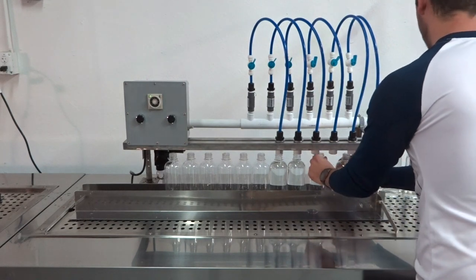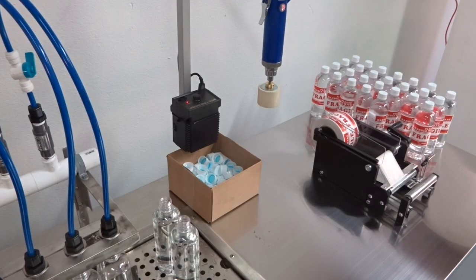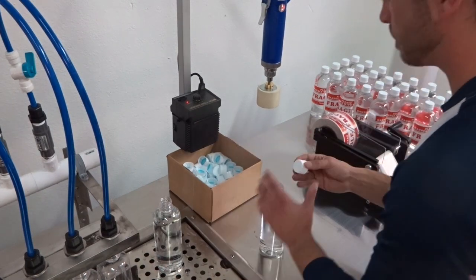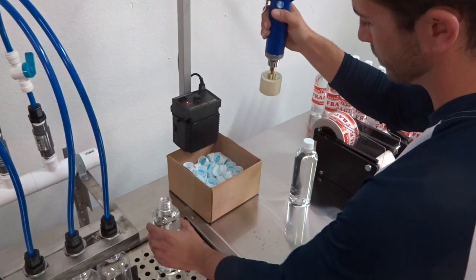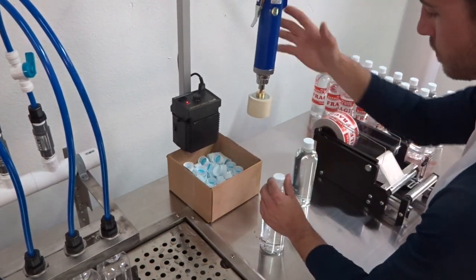Once the bottles are filled, they are moved from the filling line to the capping station. The operator places a cap on the top of the bottle and secures it with the electronic capper.